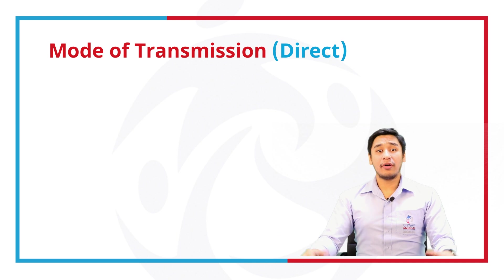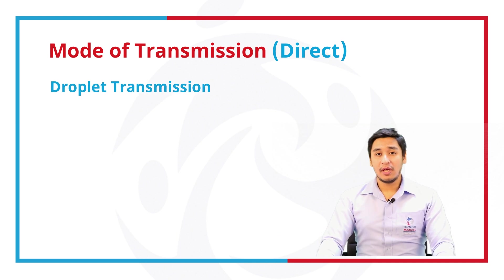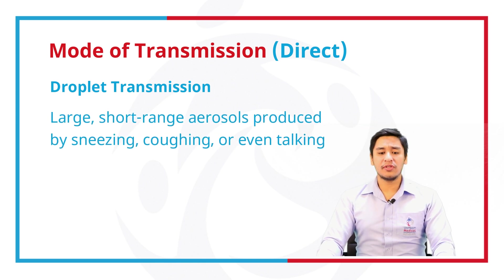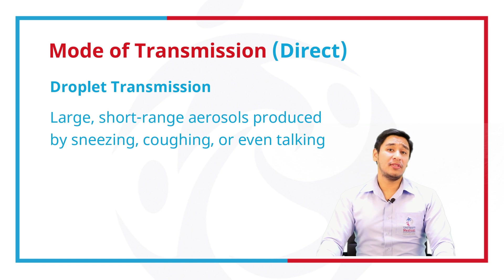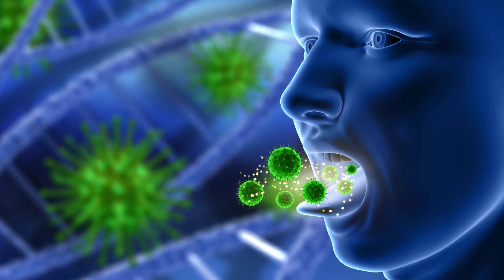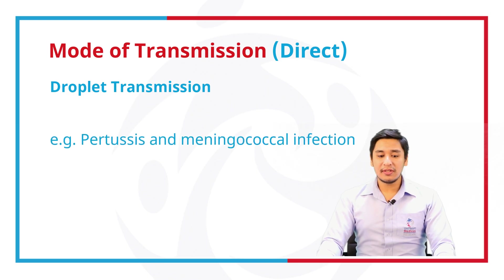As part of our direct transmission, we have droplet transmission. These are large particles, short-range aerosols that may be produced by sneezing, coughing, and even talking. Examples of diseases acquired through droplet transmission are pertussis and meningococcal infections.